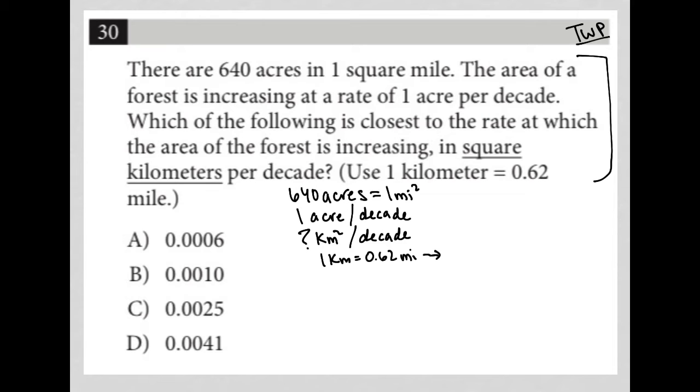So I'm going to square this and say, well, if I square both sides of this equation, one kilometer squared equals 0.62 miles all squared.